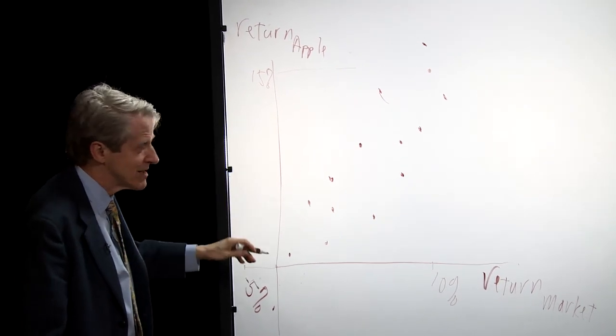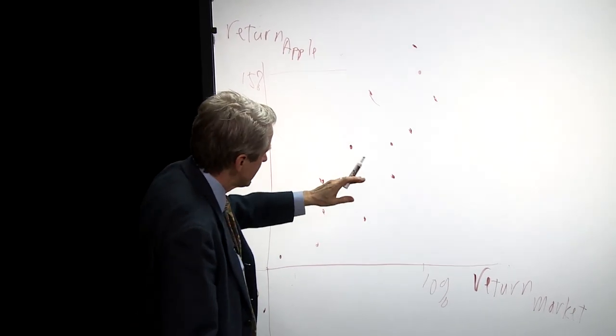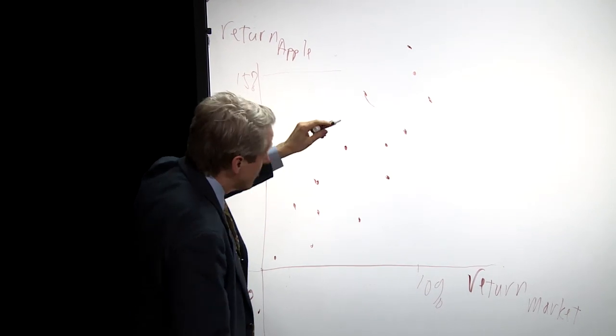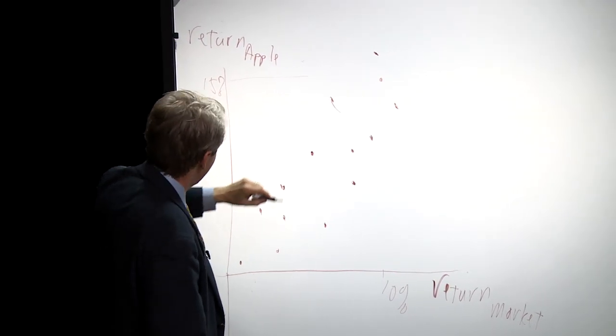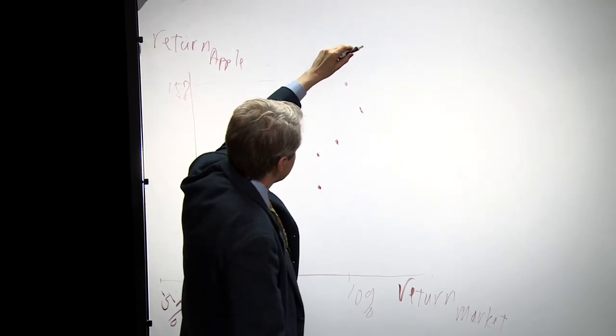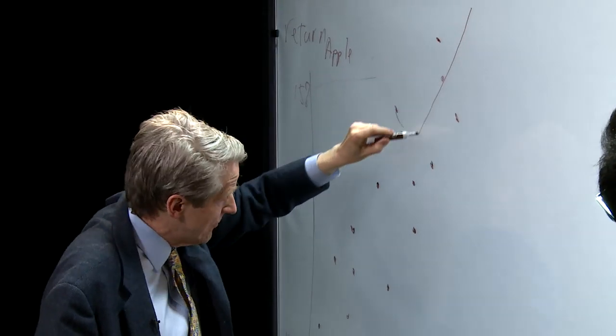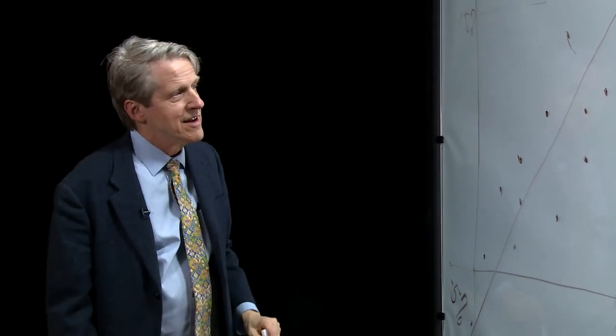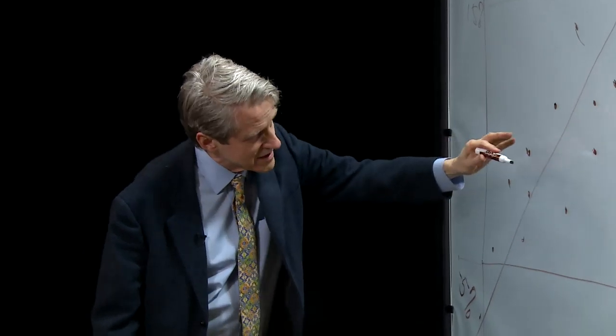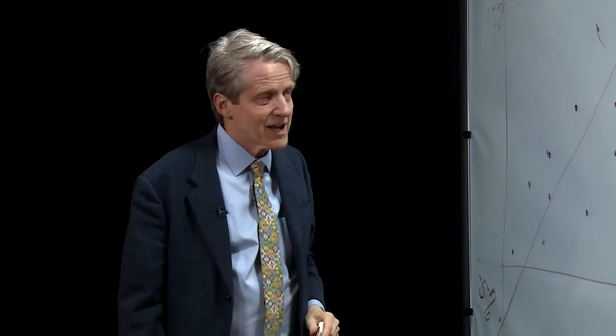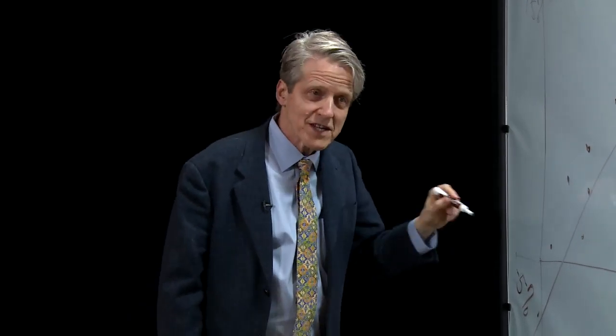When you see the scatter of points, you'd say I'm starting to see a relationship here that there's an upward sloping relation. There's a positive relation between Apple and the market. And I can draw a line that's the best fitting line through the scatter of points, so that it gets as close as it can to the scatter of points. That's called a regression line.